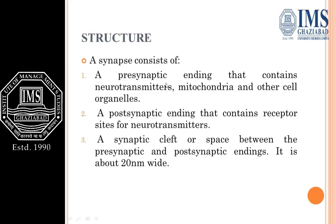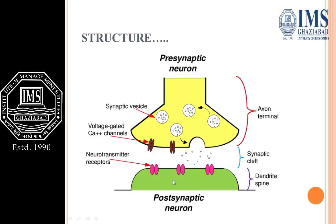The pre-synaptic ending contains neurotransmitters, mitochondria, and other cell organelles. The post-synaptic part contains receptors for the neurotransmitters. The synaptic cleft, which is the space between the pre- and post-synaptic endings, is 220 nm wide. These are known as the synaptic vesicles which contain the neurotransmitters.